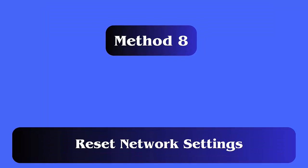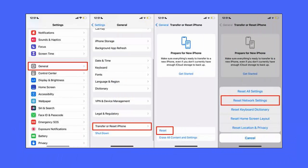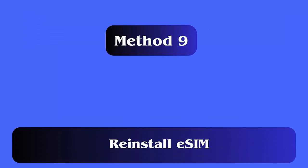Method 8: Reset Network Settings. Follow the steps — open Settings, select General, then select Transfer or Reset iPhone. Click on Reset and choose Reset Network Settings. If asked, enter your passcode and confirm.